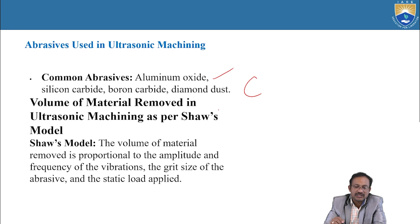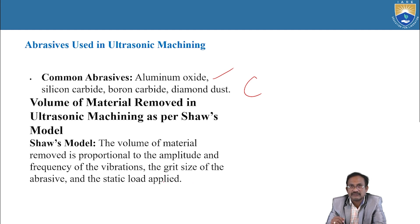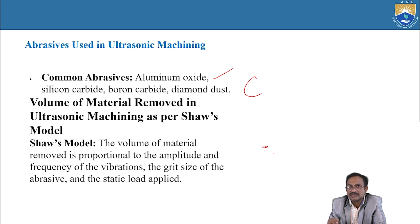Volume of material removal in ultrasonic machining as per the Shaw model: the volume of material removed is proportional to the amplitude and frequency of vibrations, the grit size of the abrasive, and the static load applied. Based on these factors, the material removal rate is determined.